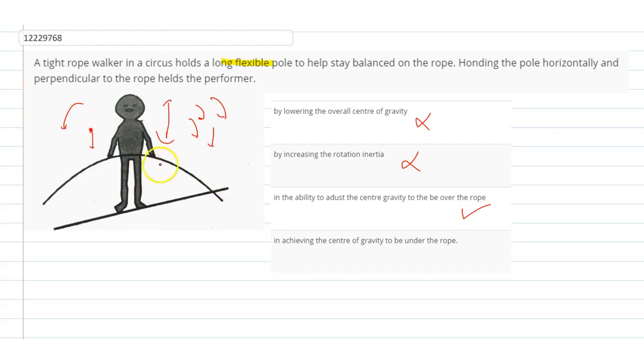Each time that the centre of gravity is starting to turn, the pole creates torque to oppose the motion.